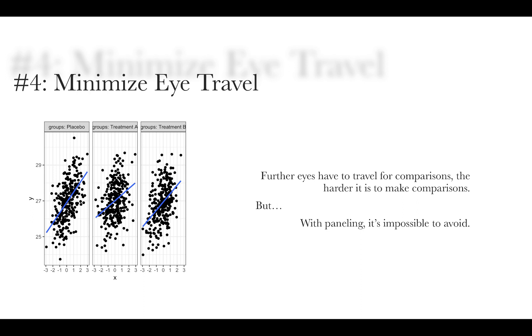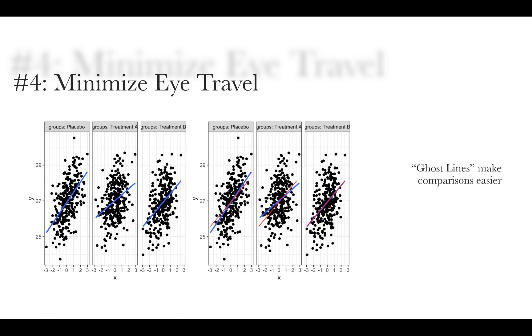So with paneling, it's impossible to avoid the fact that our eye is going to travel far. Or is it? And that's where ghost lines come in. So what a ghost line is, is it shows the relationship between, in this case, x and y. What it does is it repeats the relationship from one panel across the other panels. So here we are displaying the relationship between x and y for treatment B across the other panels. And so now it's very easy to compare treatment A to treatment B and see that treatment A has not as steep of a line as treatment B, whereas in the placebo group, there's a stronger relationship between the two.